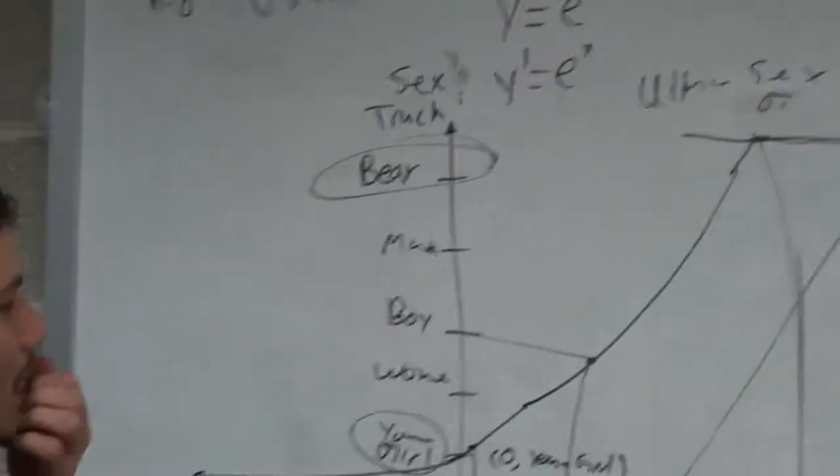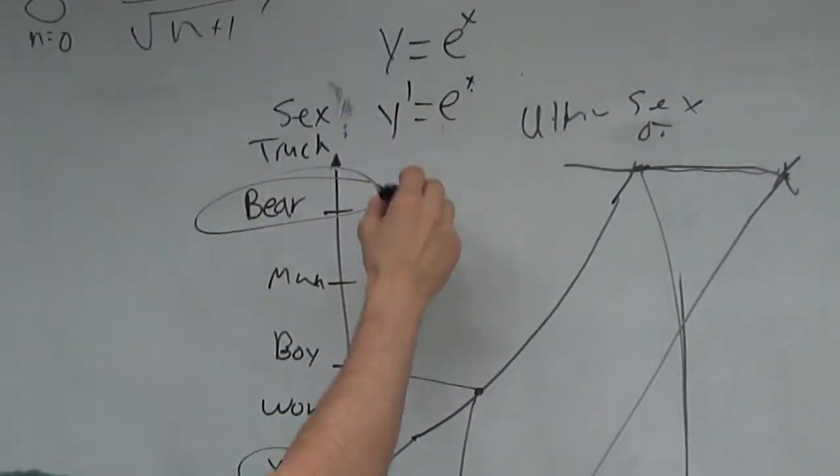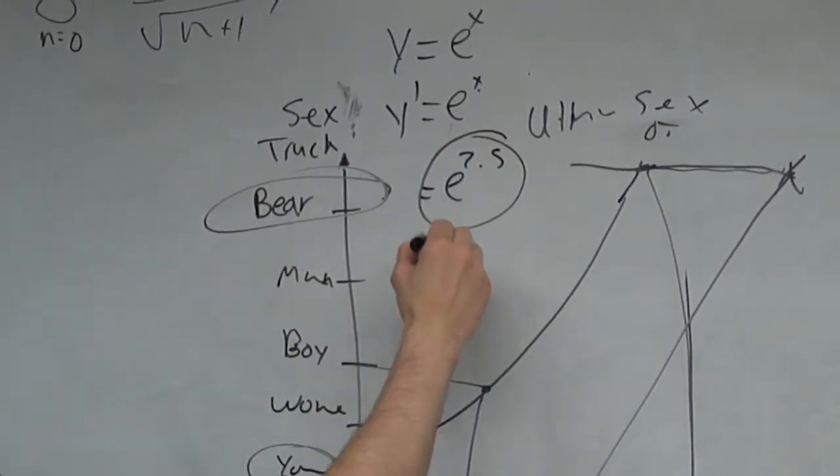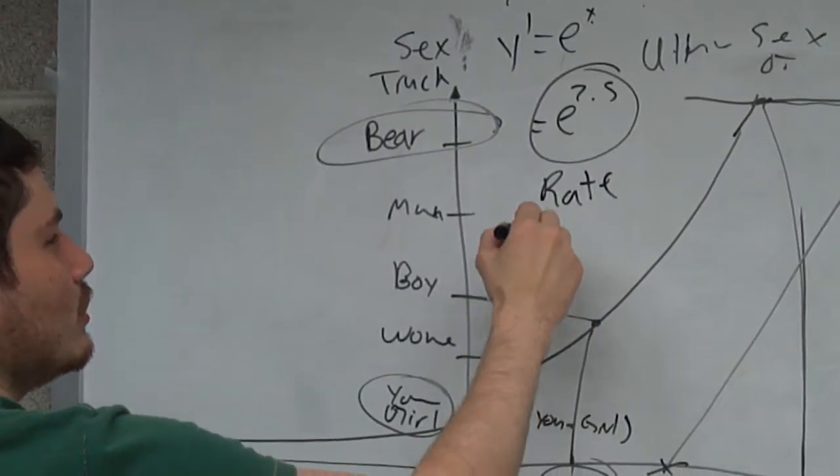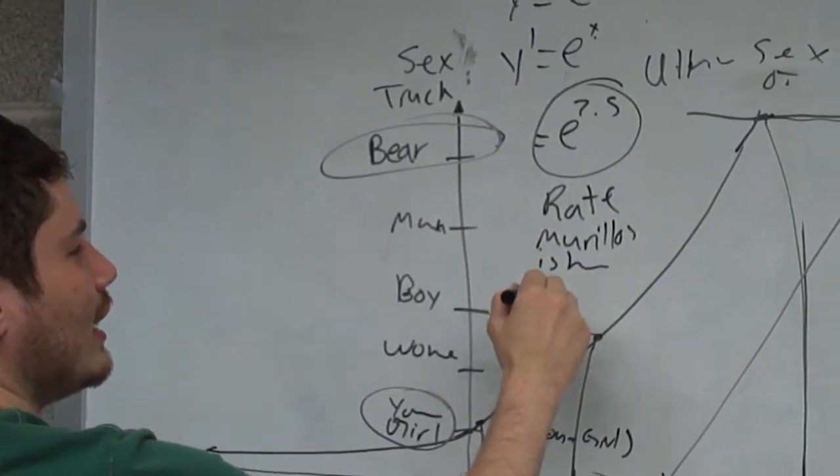So let's just assume Murillo's truck, right? So it's 2.5 years, we plug it into here, e to 2.5, and this is the rate that Murillo's truck is becoming a bear truck.